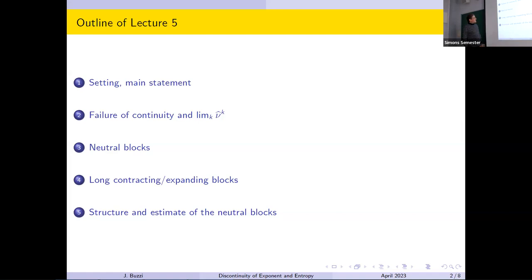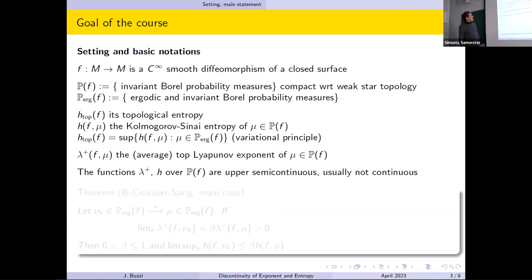Then we'll see that we are looking for what we call natural blocks. First, we'll build the longer blocks where we see essentially only expansion or only contraction. And from this, we will introduce what we need about the natural blocks, which will be the property of the tangent dynamics that will allow us to control the entropy another day. That's essentially a slide from the first lecture, just to recall the notations and for those who haven't been there before.